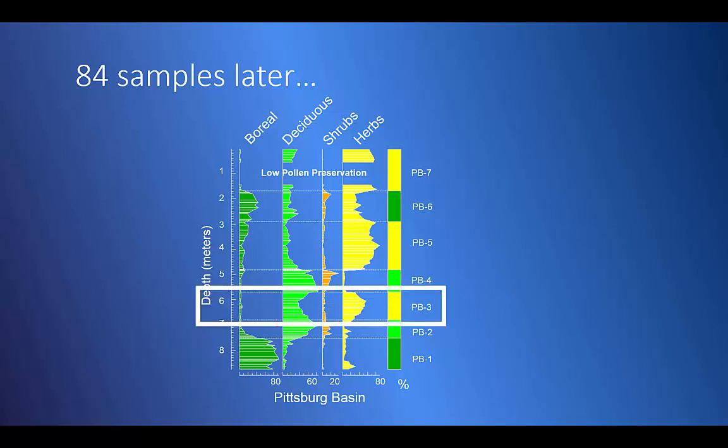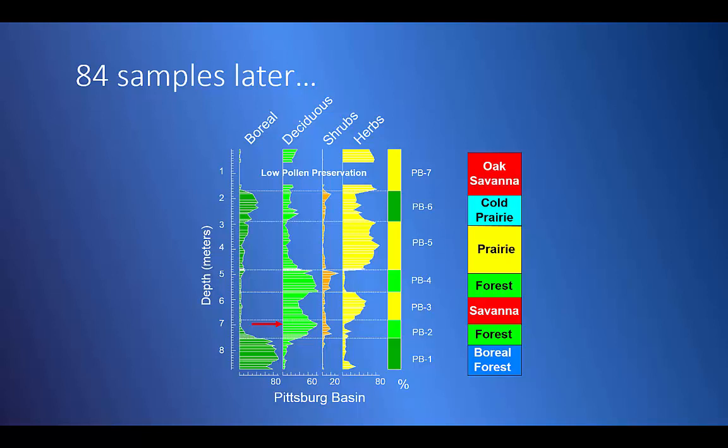PB3 follows PB2 when prairie plants became common. The trees didn't go away, though. This pollen came from a savanna, where forest and prairie meet and mix in North America. This ecosystem is rarer today. And we'd do something similar for the next four zones.